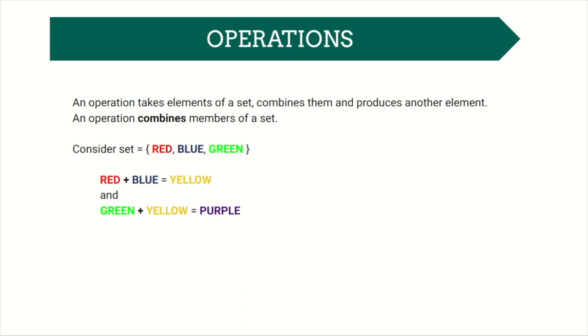Consider the set of colors: red, blue, green. Now we define an operation of mixing these. For example, red mixed with blue makes yellow, and green mixed with yellow gives purple.